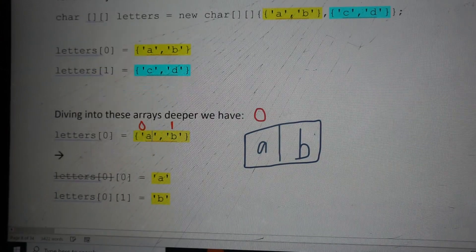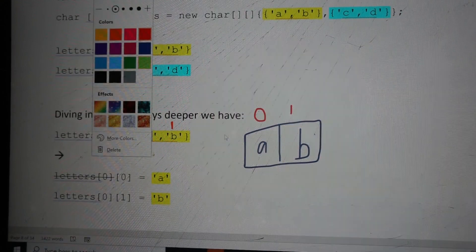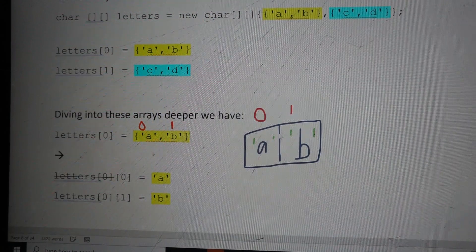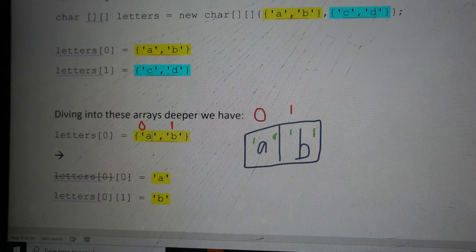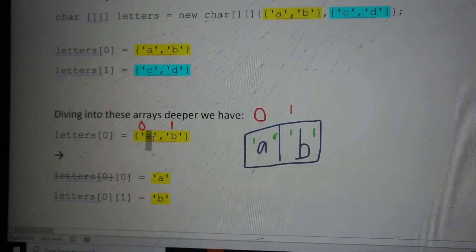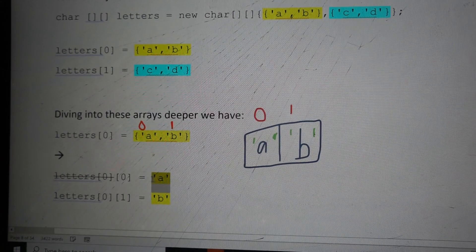If we want to access the A, remember that these are chars. This is A and this is B. To access this first element, we'll just take 0 and that will give us our A.